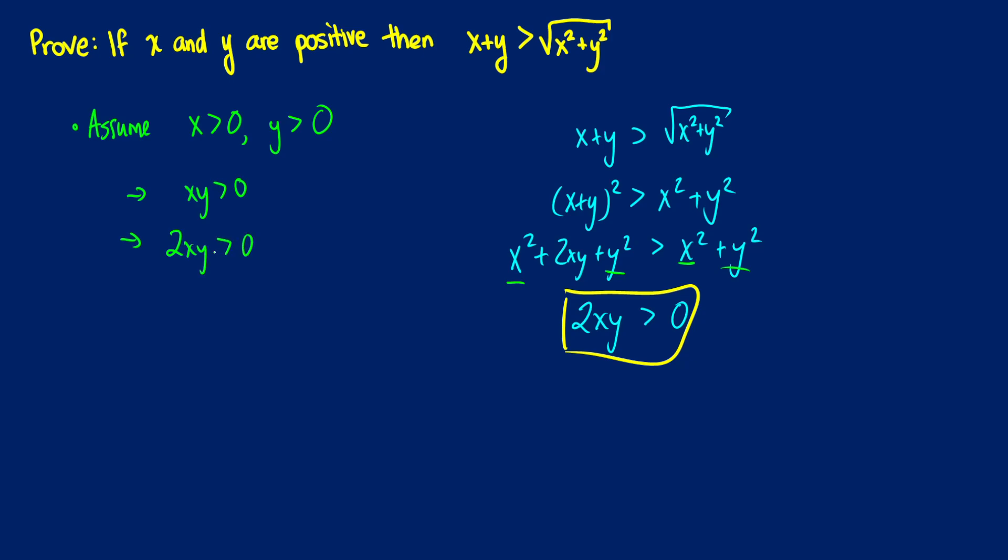And then from there, we can just do the process in reverse because we know how to get back to where we want to start. That means that 2xy plus x squared plus y squared is going to be greater than x squared plus y squared. We can now do some factoring. So we know this is going to be x plus y all squared is greater than x squared plus y squared.